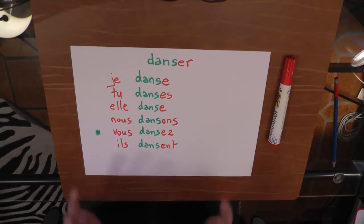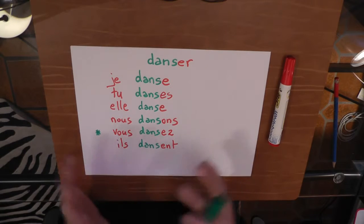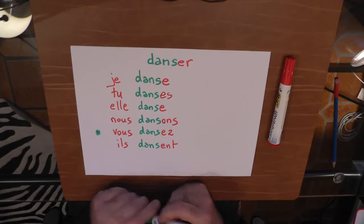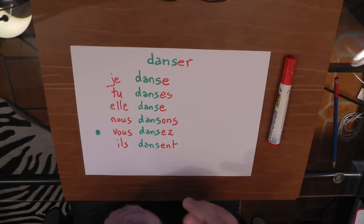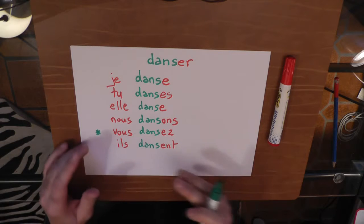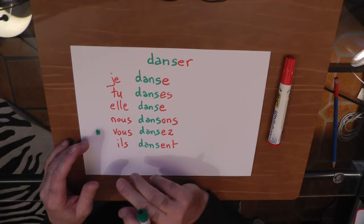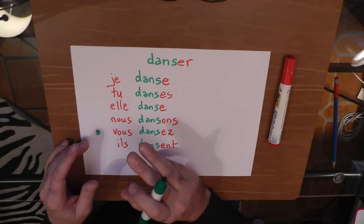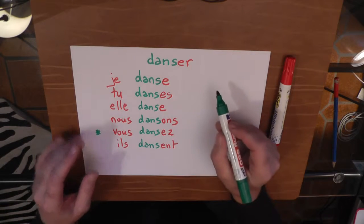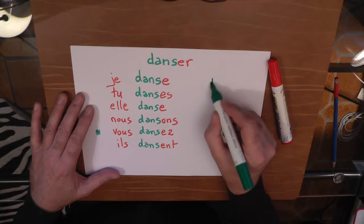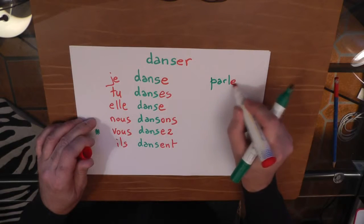Now maybe a short list of verbs — easy words, easy verbs of the first group without any exception. For instance, I made my own list. We already spoke about 'donner,' and previously we had 'chanter,' which means to sing. So another one could be, for instance, 'parler,' which means to talk.